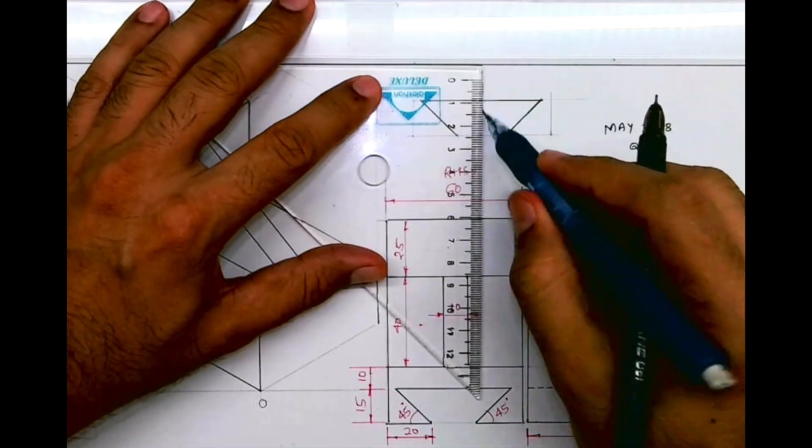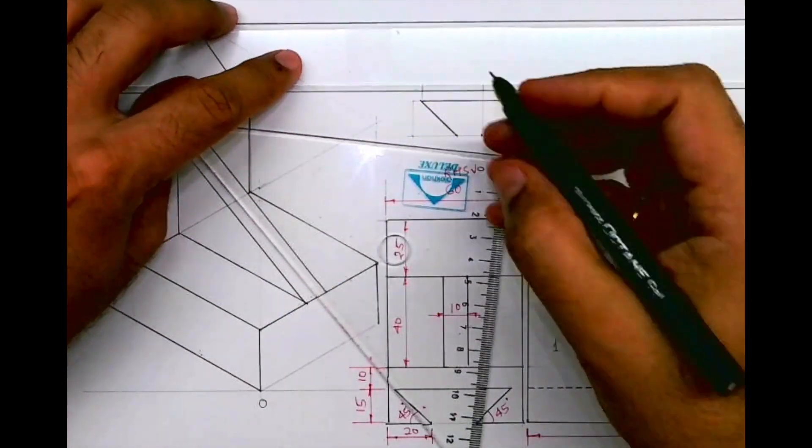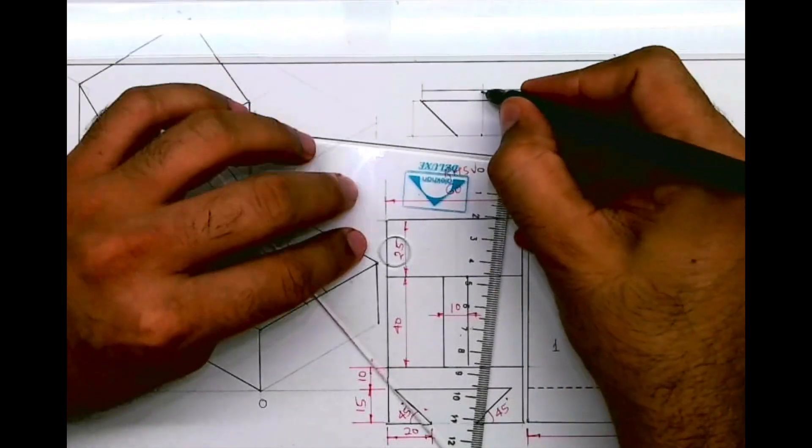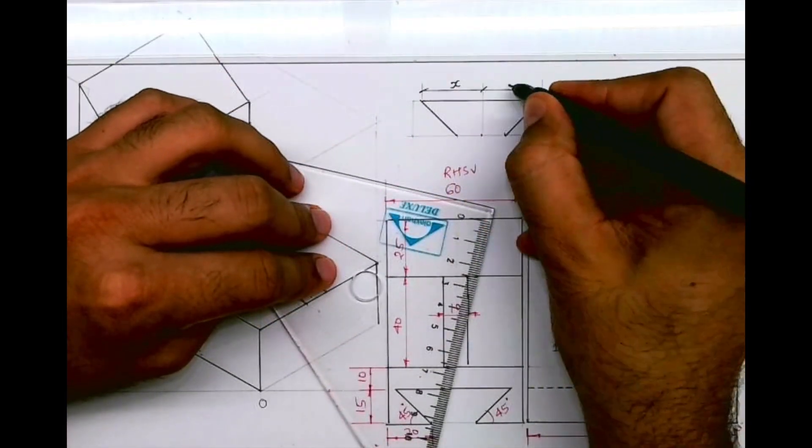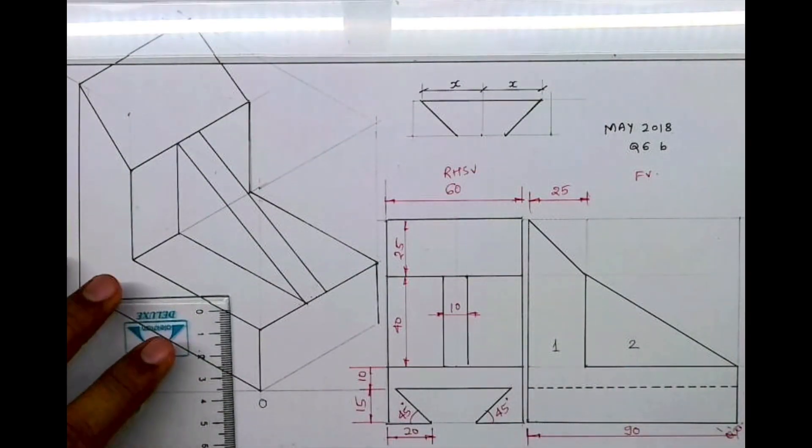We'll mark the midpoint, we'll draw a vertical line, and this is distance x. This is very important to find distance x.